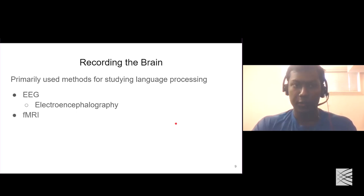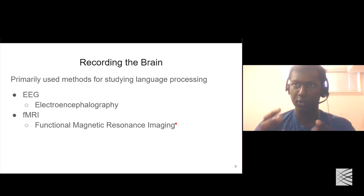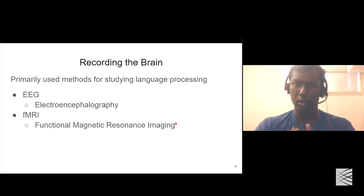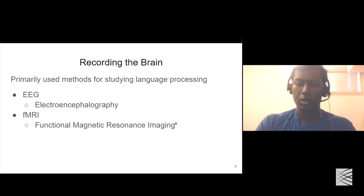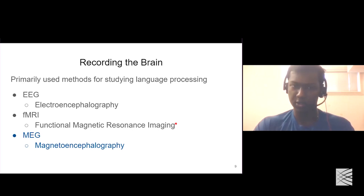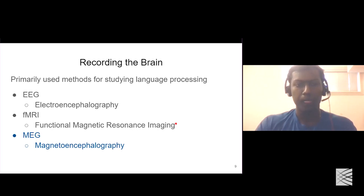The second method is fMRI, or functional magnetic resonance imaging. Participants are asked to stay still inside an fMRI scanner, and it tries to map the oxygenation level at different points in time while the participant is doing something. The one I'm going to focus on is MEG, or magnetoencephalography, because the case study I'll discuss only uses this technique to record the brain.